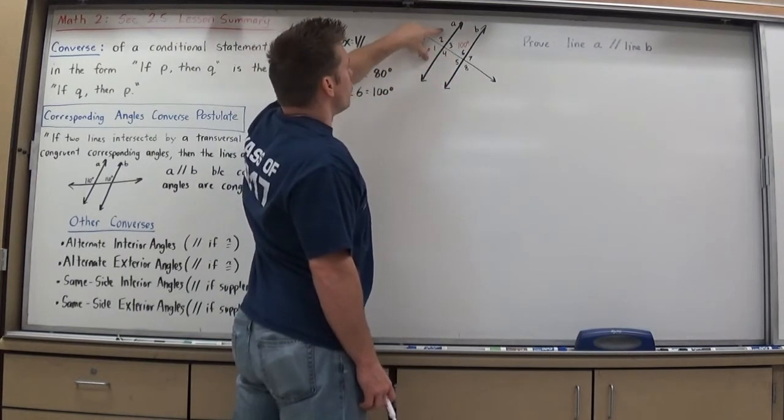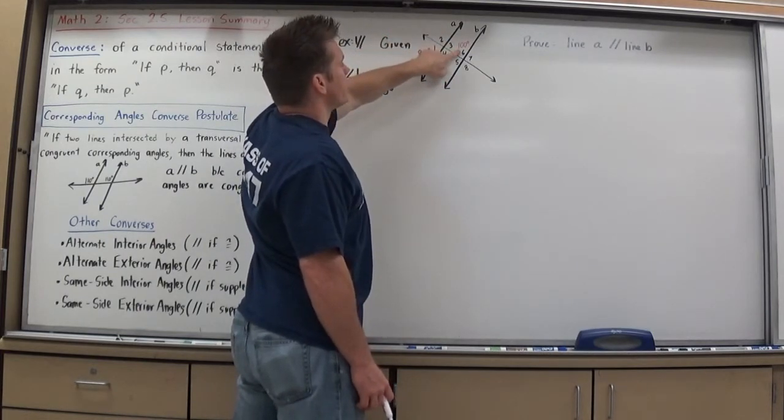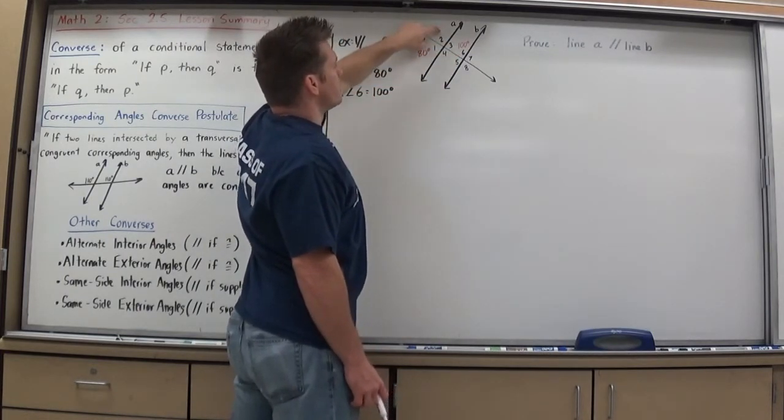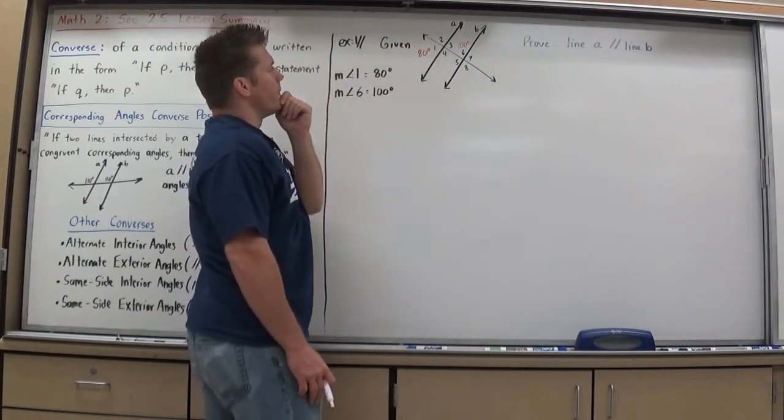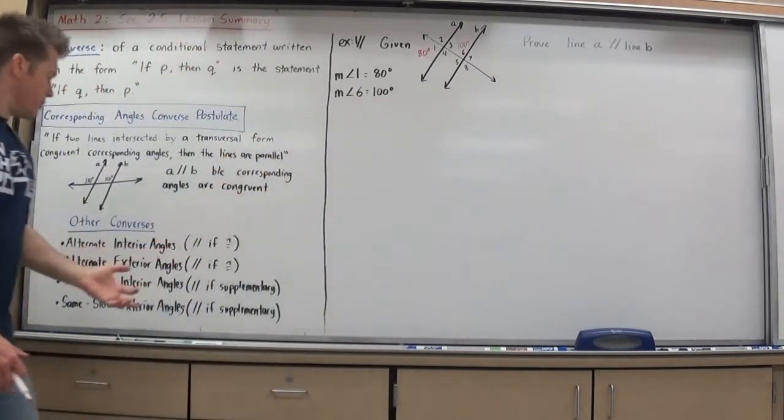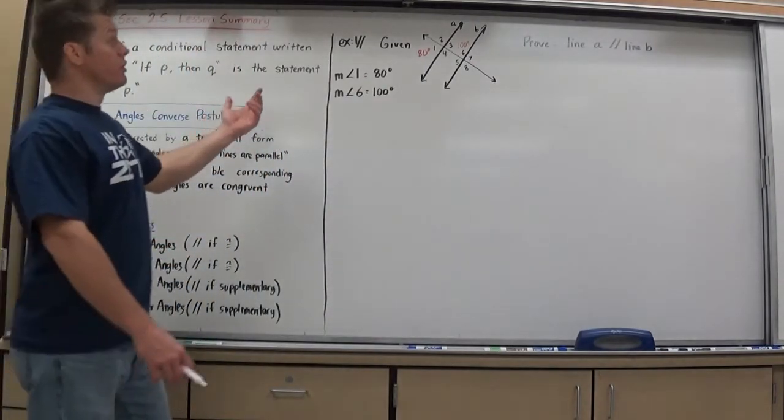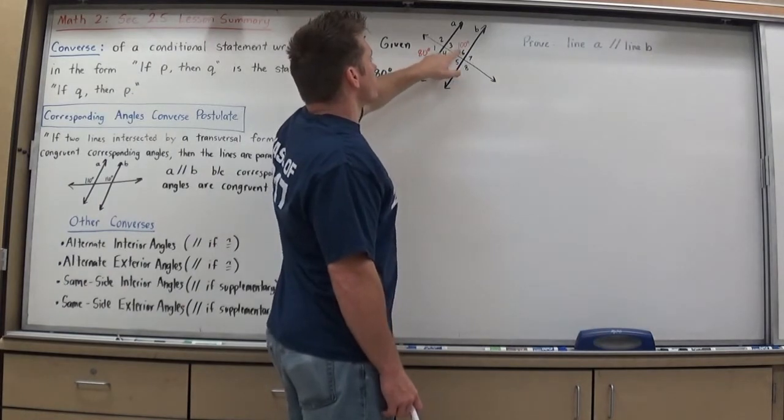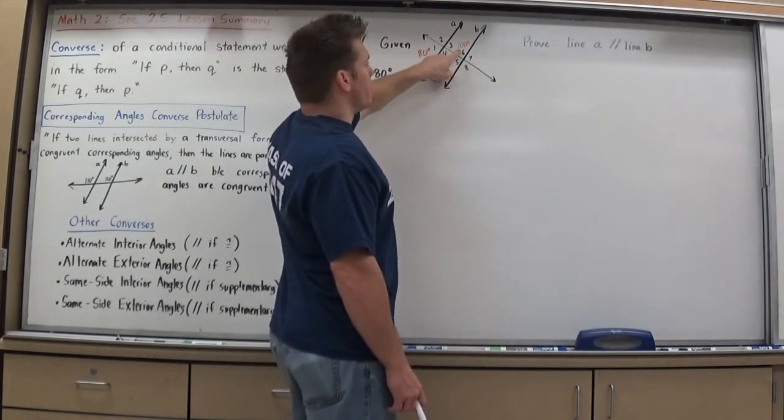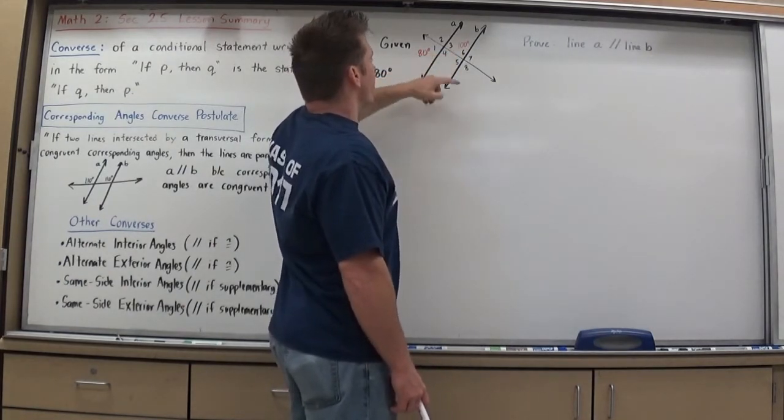I could also show one and two are linear pair and that gives me two at being 100 and shows at the corresponding angles. If I was allowed to do some of these other converse or if that's acceptable, I could do alternate interior angles. If I could show angle four congruent to angle six, then they would be able to say they're parallel. And I could get four by again doing a linear pair.